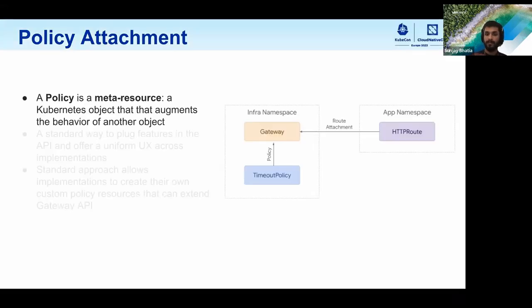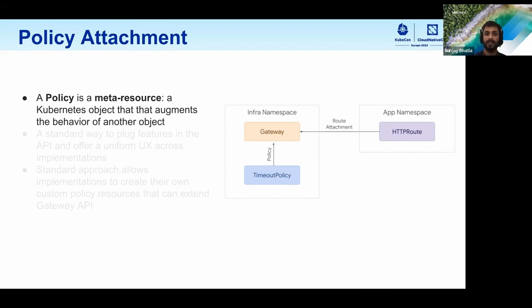Now we'll move on to a pretty powerful extension point that Gateway API is enthusiastic about — policy attachment. More generally, we'll talk about meta resources, which Daniel touched on with ReferenceGrant. A meta resource is a Kubernetes object that augments the behavior of another one. In the case of ReferenceGrant, you allow cross-namespace references via its configuration. Similarly, a policy is a meta resource that allows you to augment the behavior of another object — applying implementation-specific configuration to an HTTPRoute, a gateway, or a service.